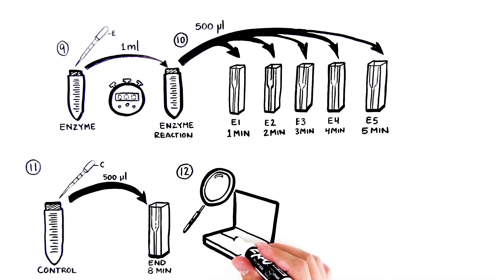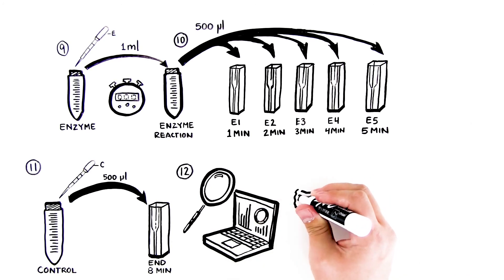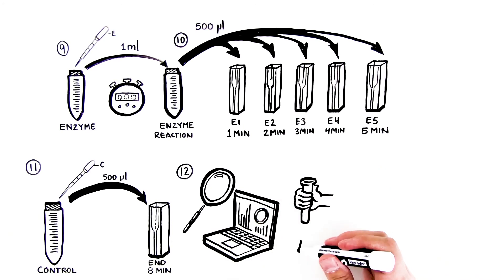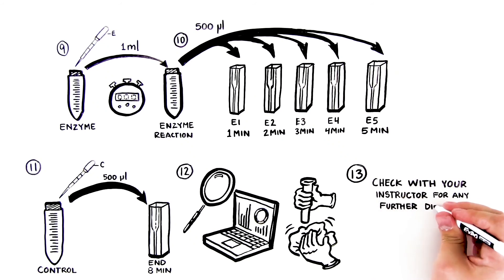Step 12: Proceed with the analysis of your samples. After you've finished your analysis, rinse out your reaction tubes, cuvettes, and DPTPs with copious water and save them for later activities. Step 13: Check with your instructor for any further directions or information.